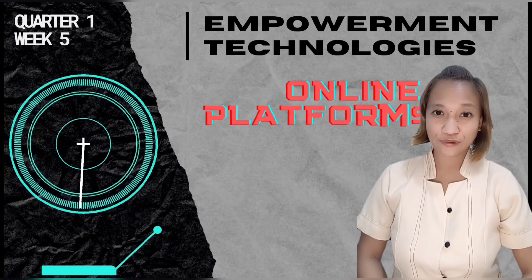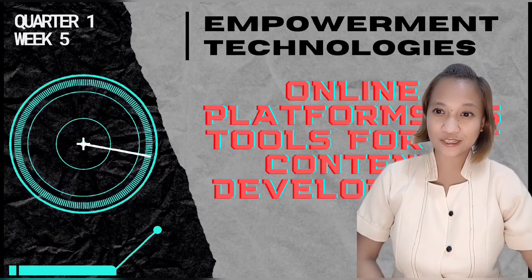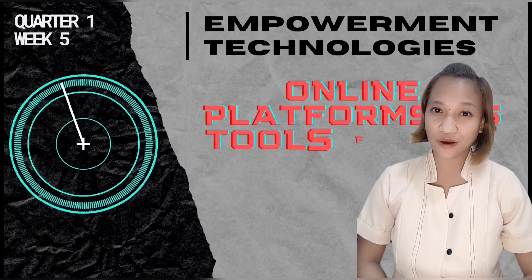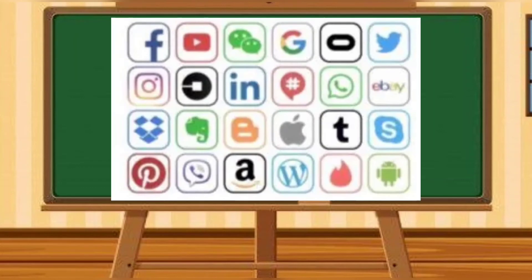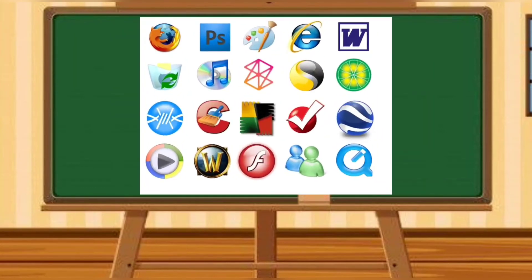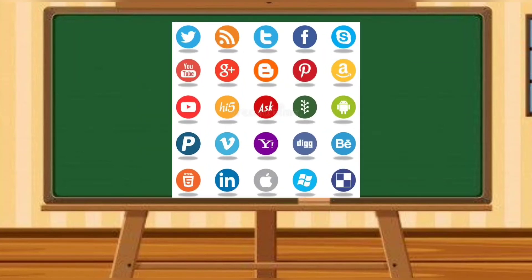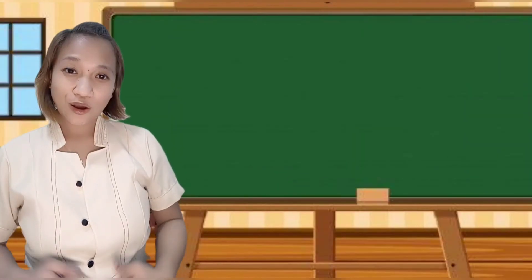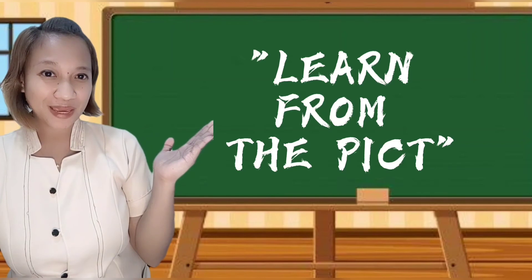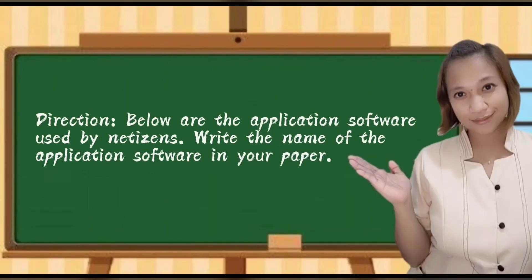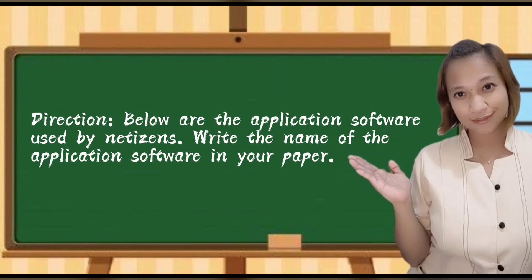Now you have learned the different types and uses of online platforms, along with their examples. Kindly get your mobile phones or any other gadgets, and I will give you 5 minutes to familiarize yourselves with the different icons. Let's start our activity entitled 'Learn from the Pit.' Below are the application software used by netizens. Write the name of the application software on your paper.